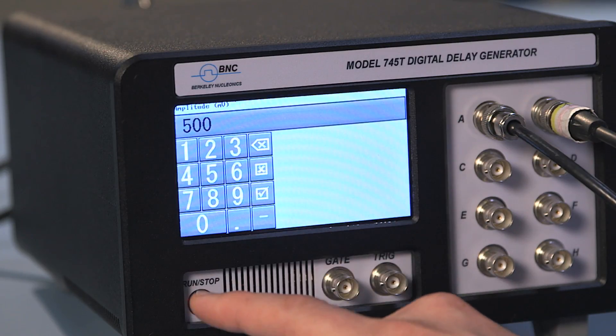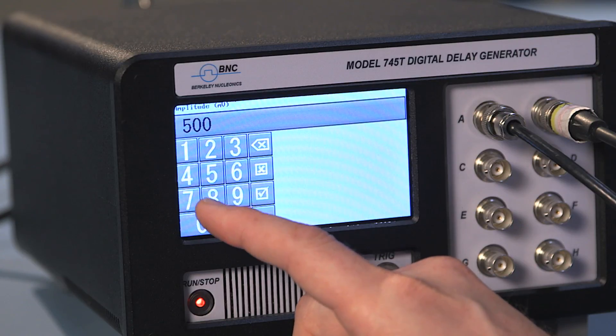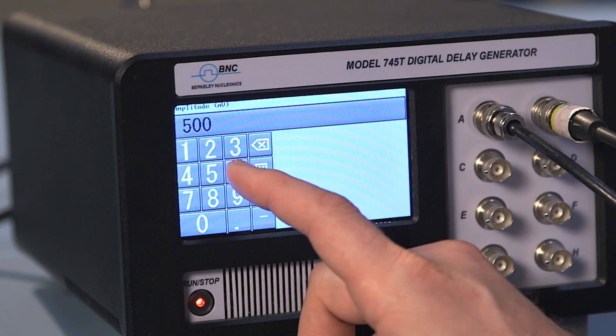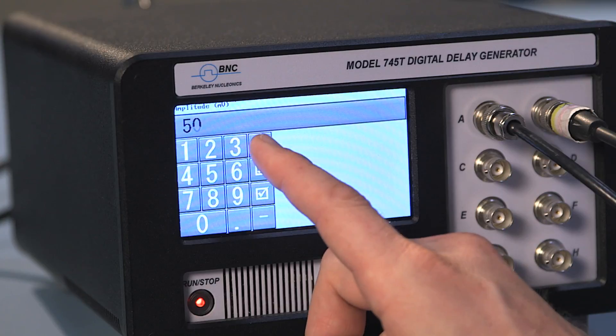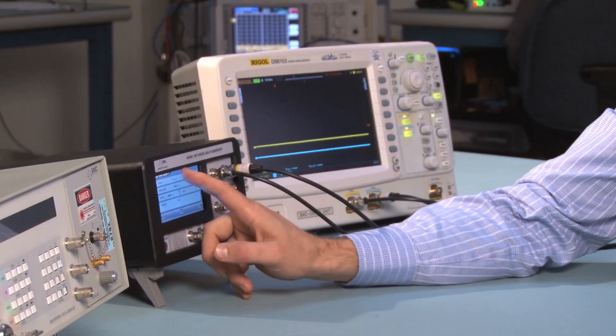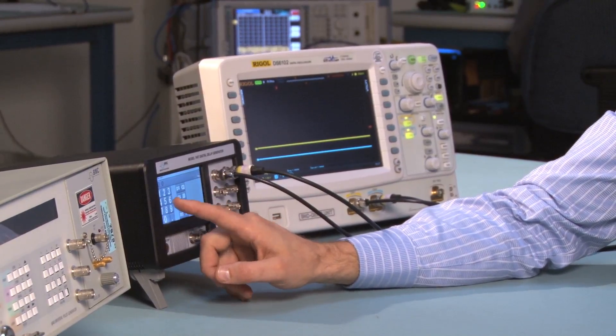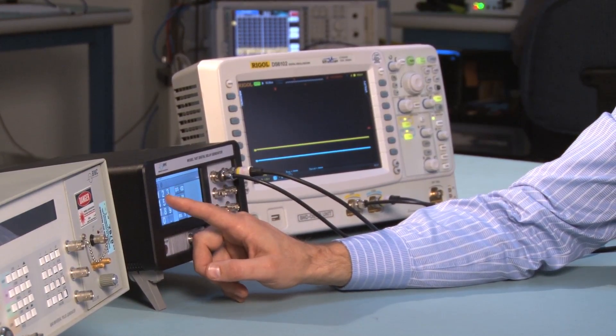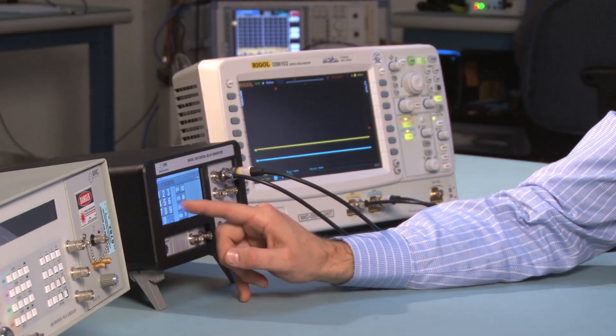If I want to vary the amplitude, we can vary the amplitude in millivolts. Say we're going to clear this out and we'll go to six volts. If I want to set a delay here, this is from T0. I'll change my delay here to 100 nanoseconds.